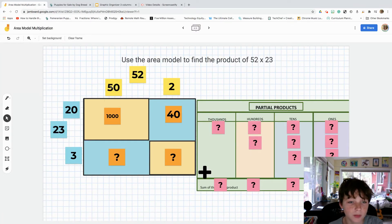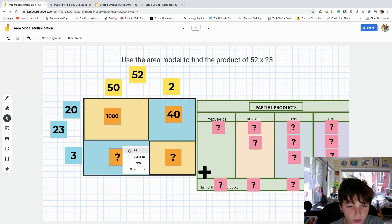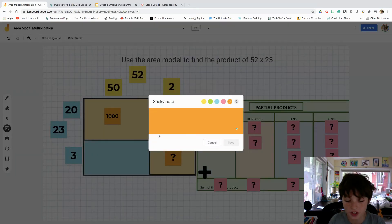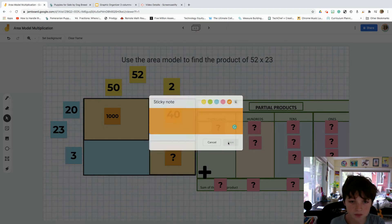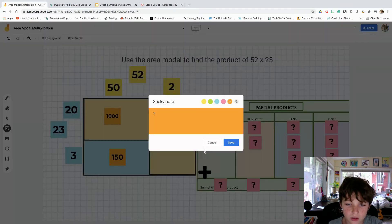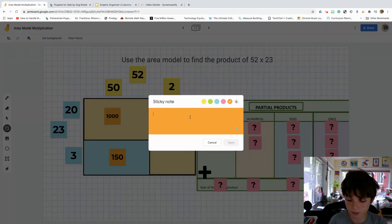And then 3 times 50. Well, 3 times 5 equals 15. So then just add the zero out from the 50 in 150. Next, let's do the final one. 3 times 2. Okay, well, I know that I always know my times 2. So this is going to be an easy 6 for me.